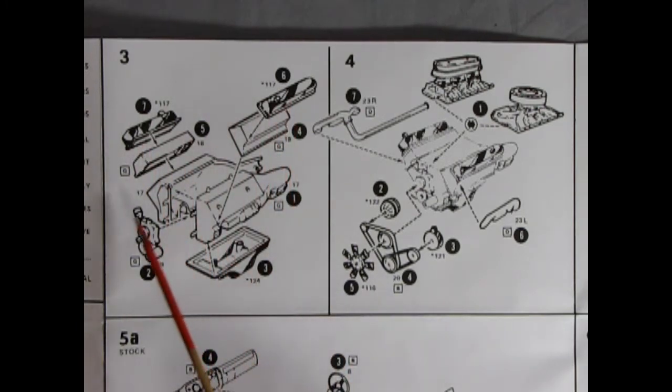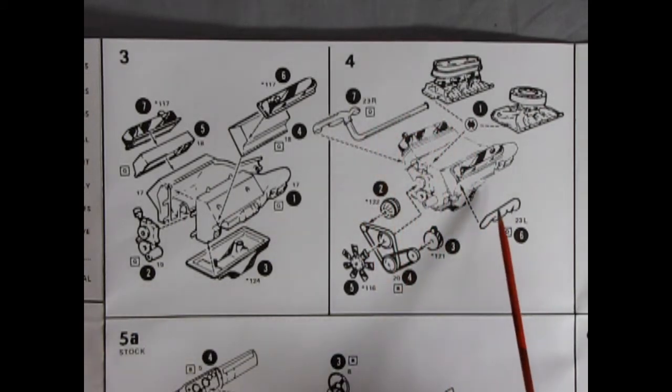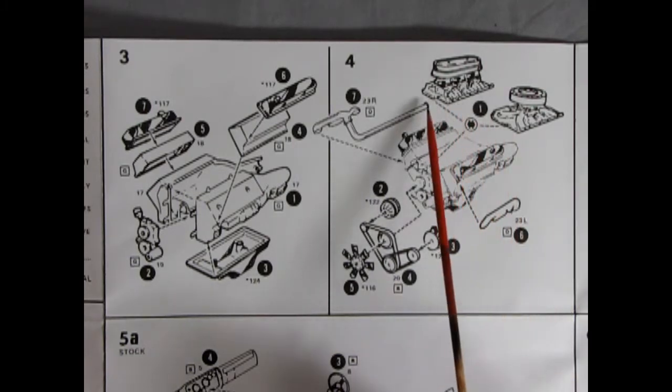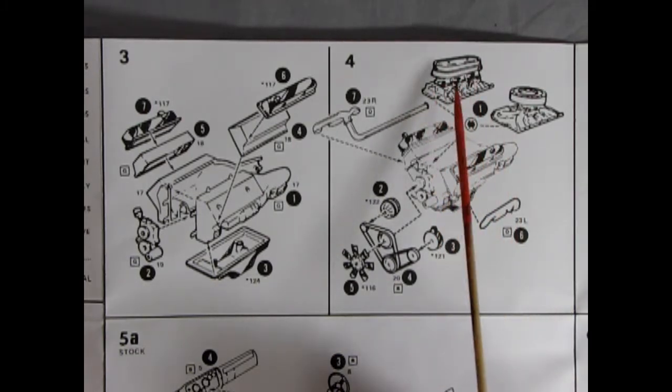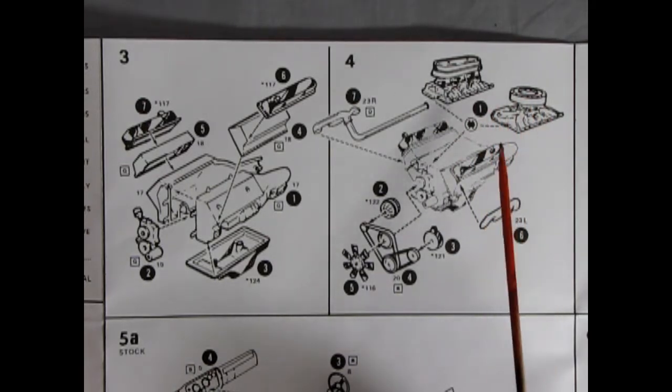front engine cover and then into step four we have the exhaust manifolds left and right as well as our alternator power steering pump belts and fan and then your option of the 1971 446 pack or the 1974 air cleaner four barrel carburetor.